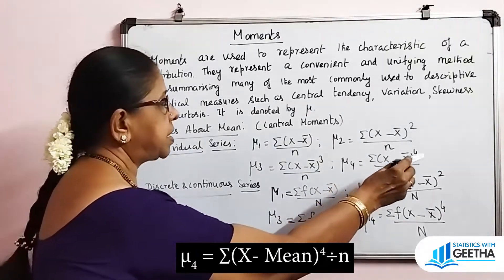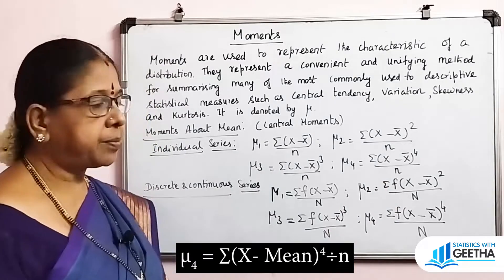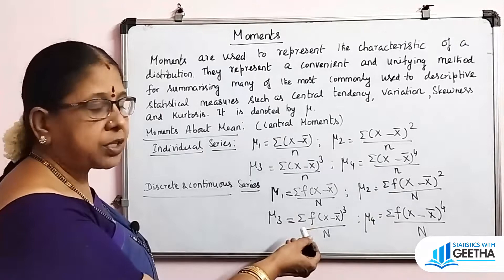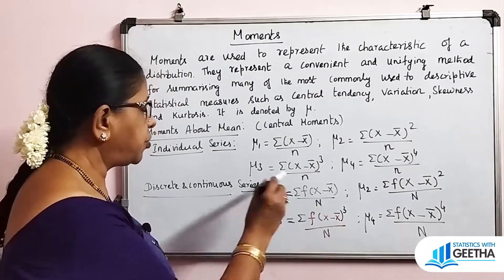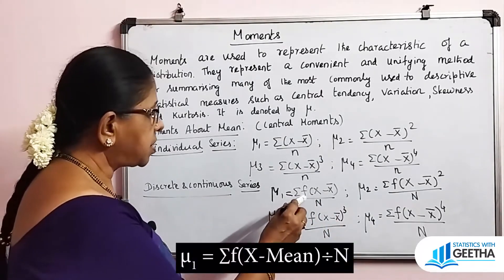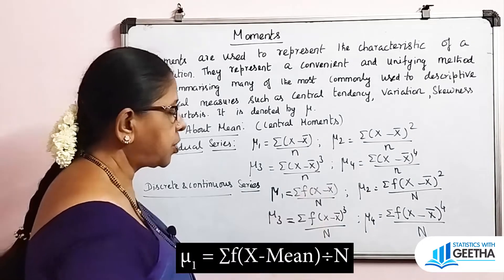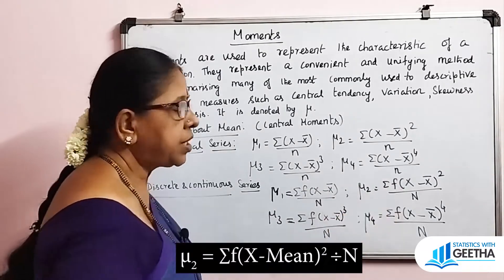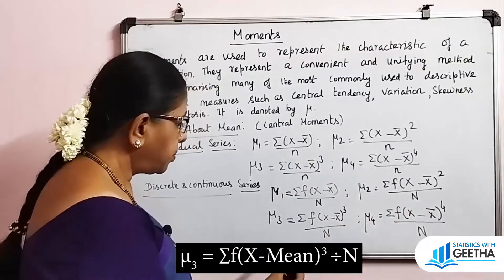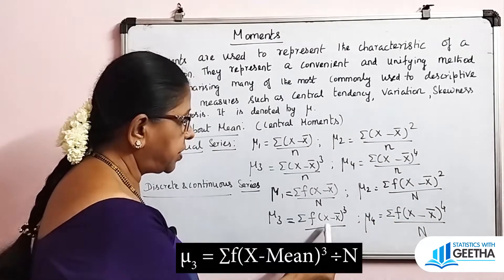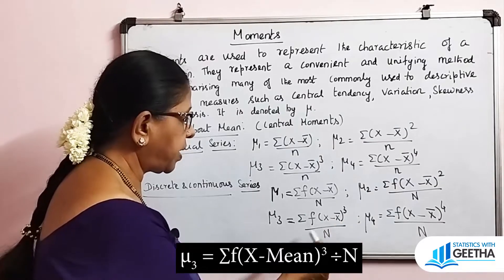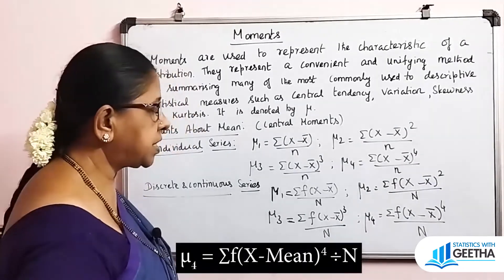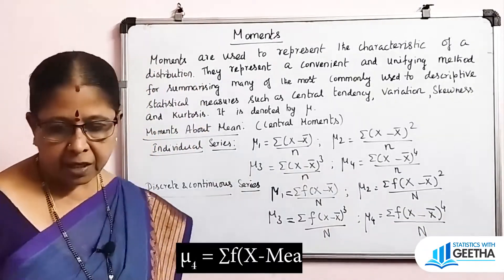mu4 = summation of (x minus x-bar) to the power 4 divided by n. For discrete and continuous series, frequency f is included and capital N is used. mu1 = summation f(x − x̄) / N, mu2 = summation f(x − x̄)² / N, mu3 = summation f(x − x̄)³ / N, and mu4 = summation f(x − x̄)⁴ / N.